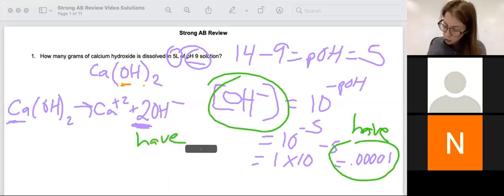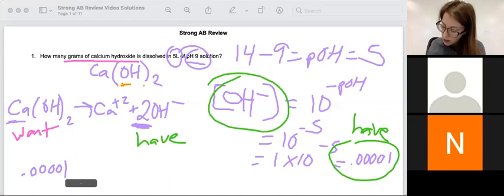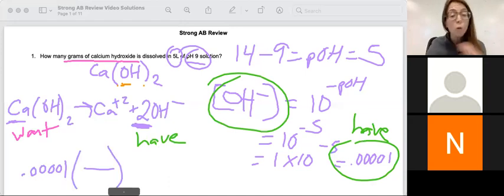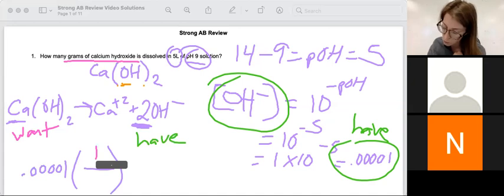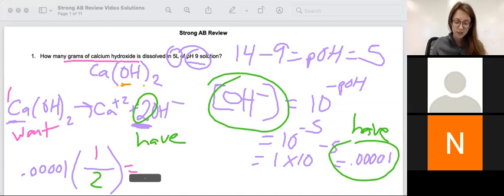I want my calcium hydroxide. You might be like, well, why do I want the calcium hydroxide? The question is asking about the calcium hydroxide, not about the hydroxide. Taking my 0.00001 and multiplying by want over have. It's always want over have. That doesn't mean it's always 1 over 2 or 2 over 1, but in this case, want is a 1 because we have one calcium hydroxide. Have is a 2 because we have two hydroxides. So 0.00001 times 1 half or divided by 2.